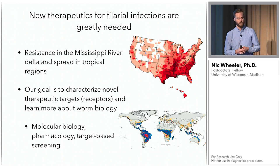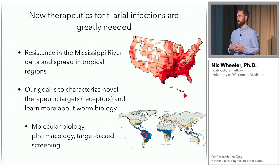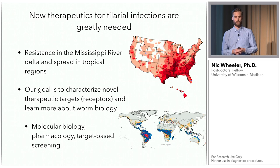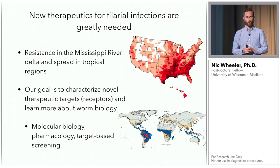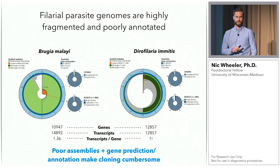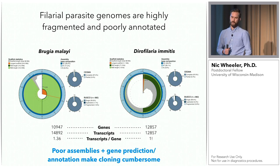Our goal is to characterize novel therapeutic targets, particularly receptors, and learn more about worm biology using molecular biology, pharmacology, and target-based screening. The image on the top right shows the incidence of heartworm in 2016 — it's really high in the American south, which is also where resistance is spreading. The bottom right shows the habitat of Aedes aegypti, a mosquito vector for lymphatic filariasis. Because of climate change, the habitats of Aedes aegypti will spread by 2050, and the disease will spread too, so we really need new drugs.